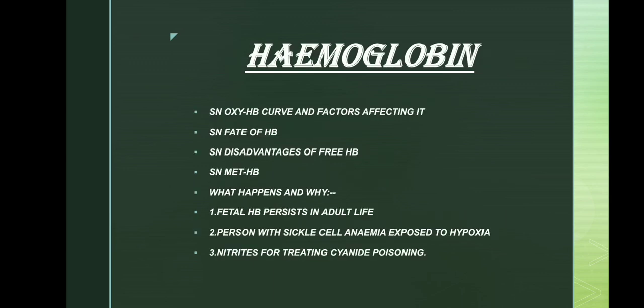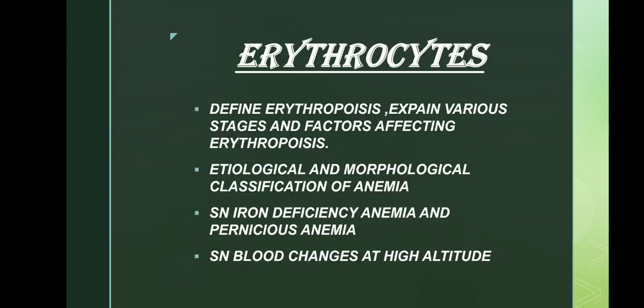From the hemoglobin chapter, short note on oxy-hemoglobin dissociation curve and factors affecting it is an important question. Short note on fate of hemoglobin is also important. Disadvantages of free hemoglobin is not important, and short note on met-hemoglobin is also not important. What happens and why fetal hemoglobin persists in adult life is important. If a person with sickle cell anemia is exposed to hypoxia, and use of nitrites for treating cyanide poisoning are also important.